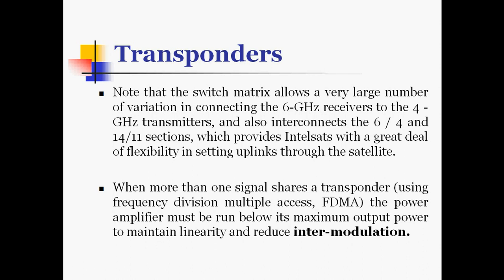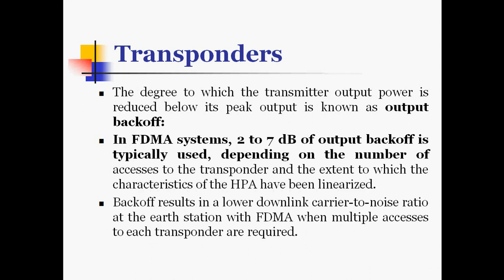When more than one signal shares a transponder using frequency division multiple access, the power amplifier must be run below its maximum output power to maintain linearity and reduce intermodulation. This reduction of transmitter output power below its peak is known as output backoff. In FDMA systems, 2 to 7 dB of output backoff is typically used depending on the number of accesses to the transponder and the extent to which the high power amplifier characteristics have been linearized.